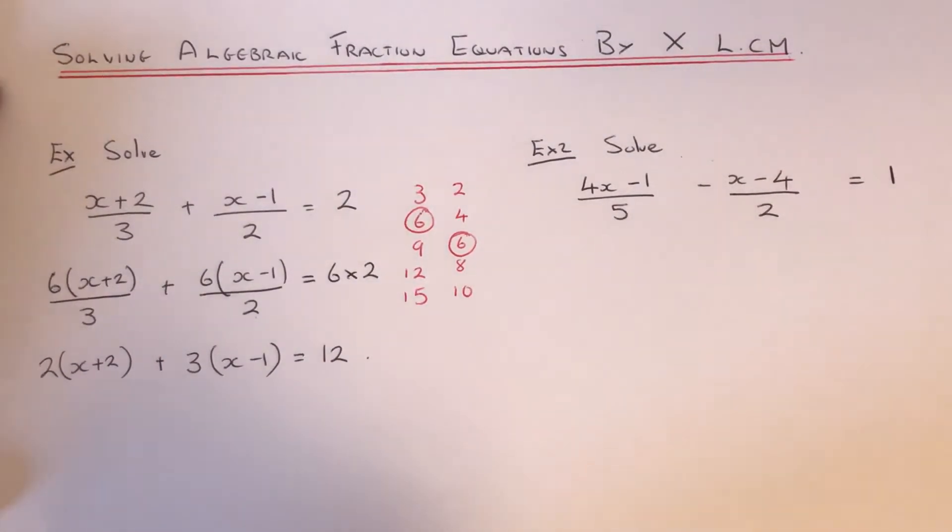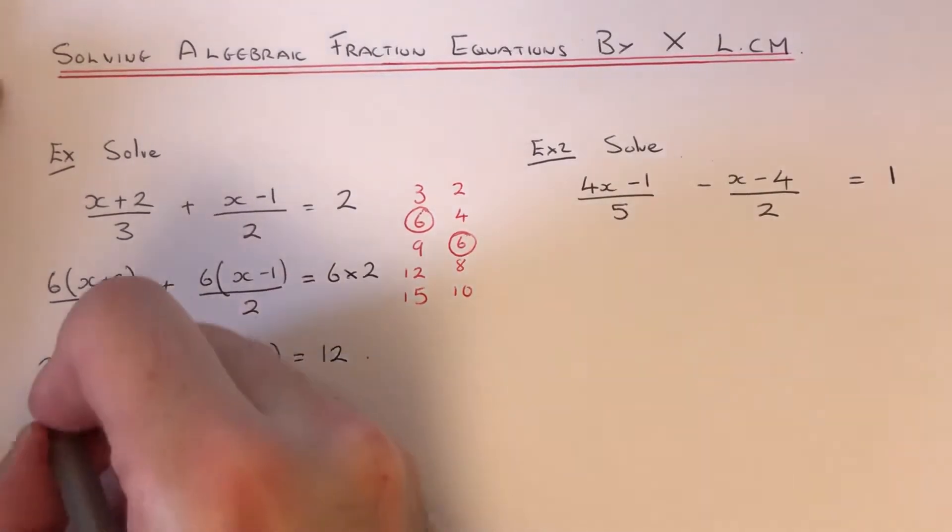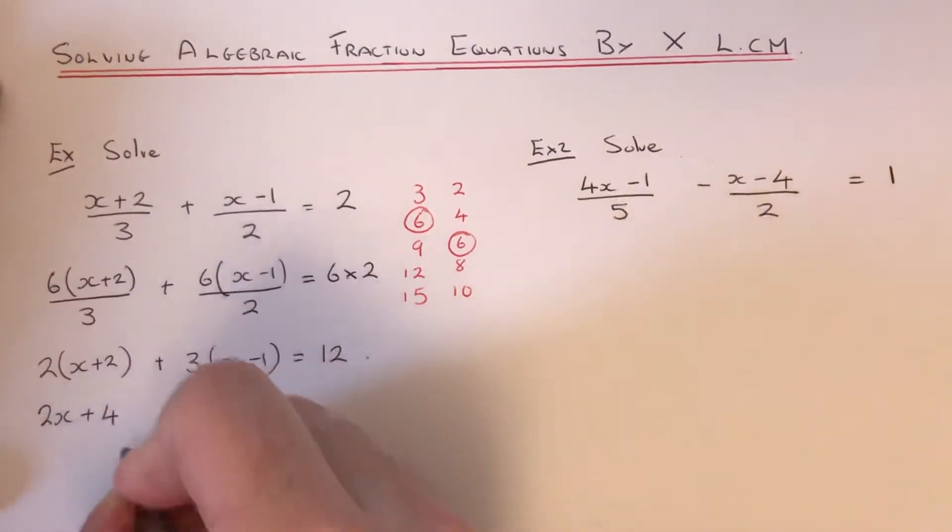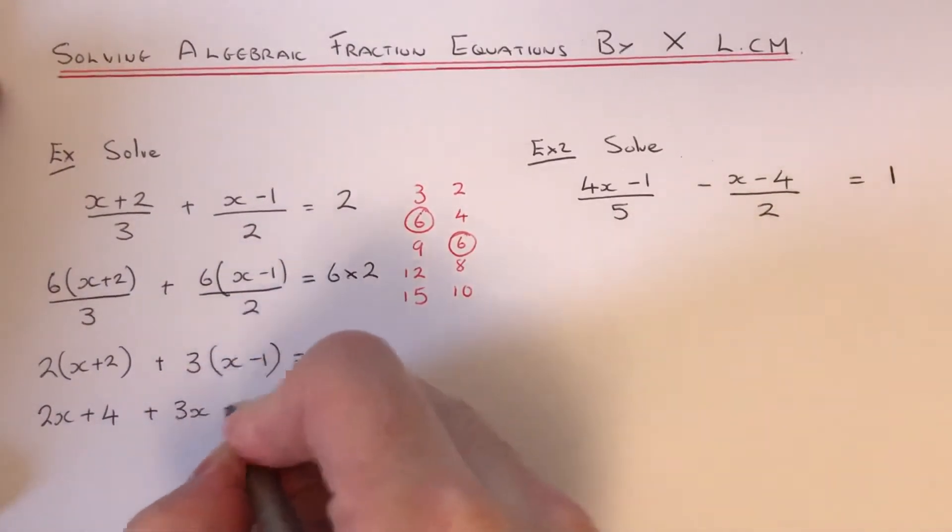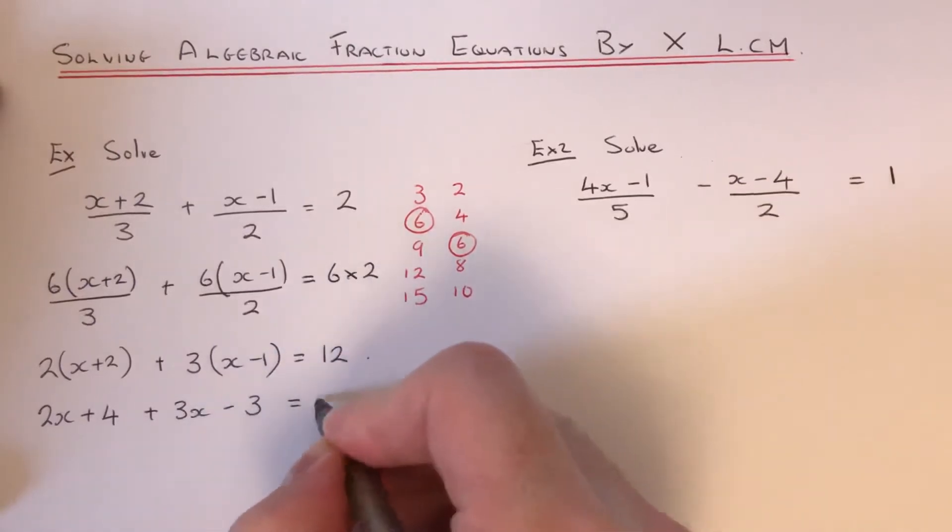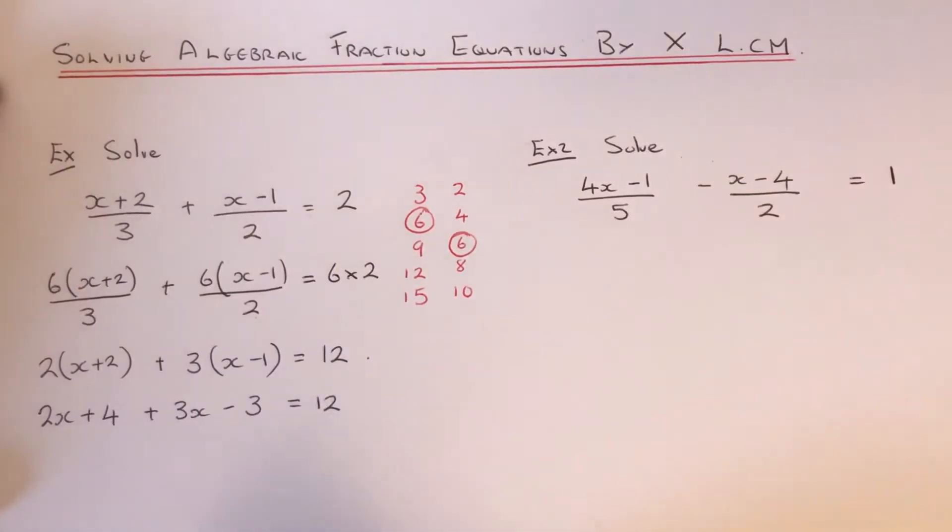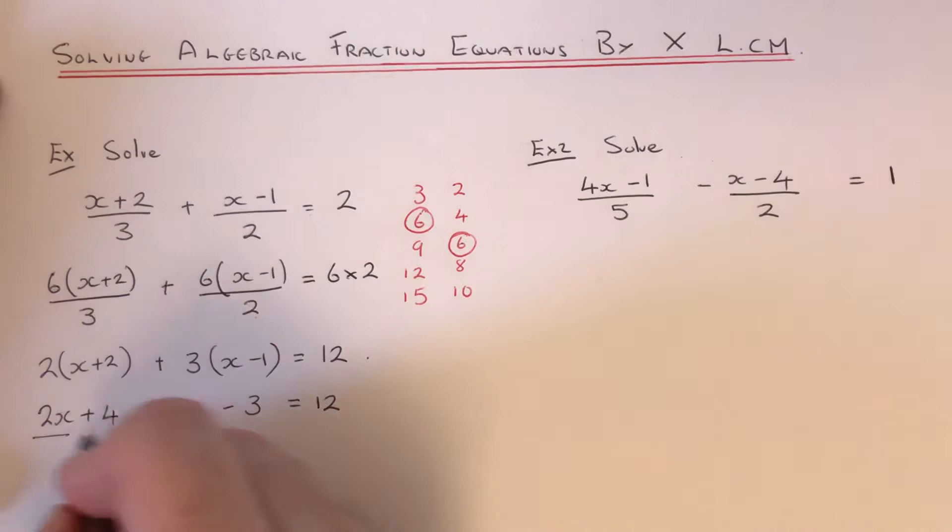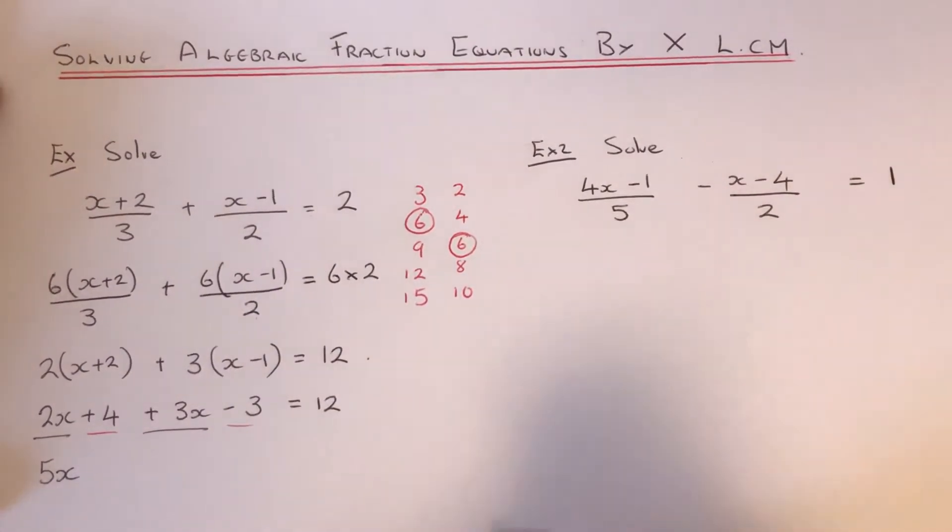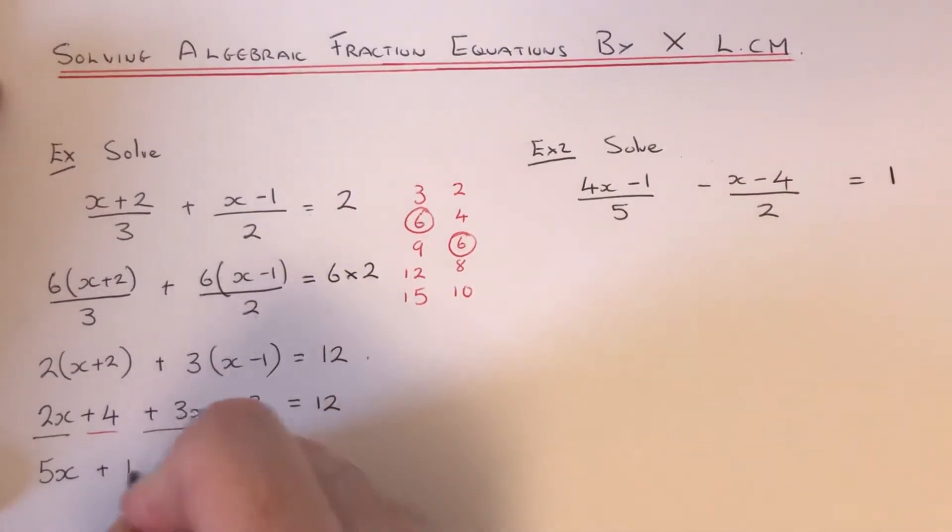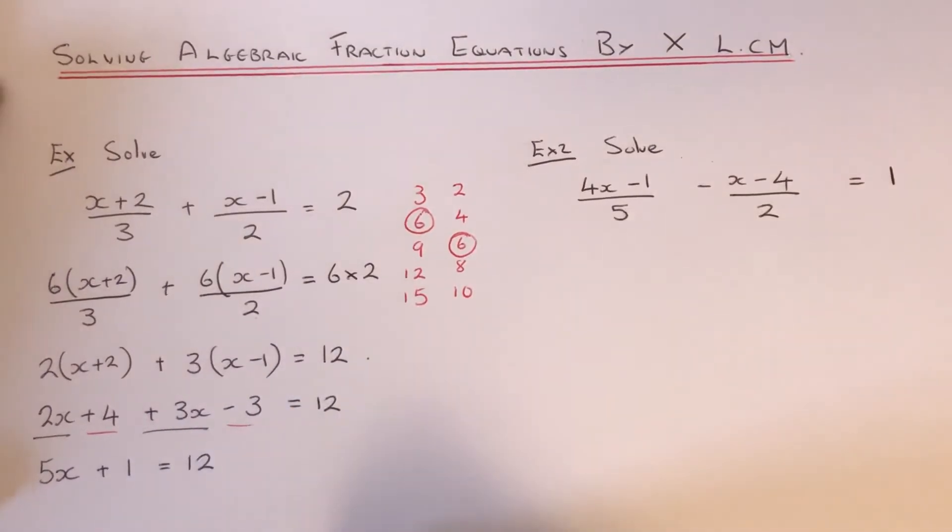So we can now multiply out our brackets. Our first bracket will be 2x plus 4. Our second bracket will be 3x minus 3. If we collect our like terms, we can add the x's together. So that will be 5x. And we can add our numbers together, which is plus 1.